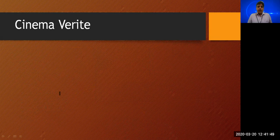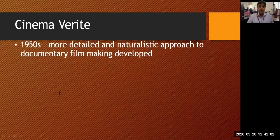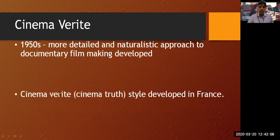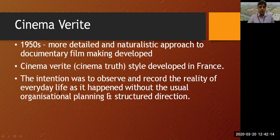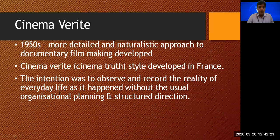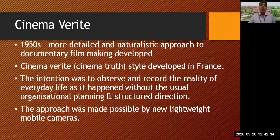There are very important filmmaking movements to understand. Cinema verité, developed in the 1950s, was a more detailed and naturalistic approach to documentary filmmaking developed in France. The intention was to observe and record the reality of everyday life as it happened, without the usual organizational planning, structure, or direction. This approach was made possible by new lightweight mobile cameras.